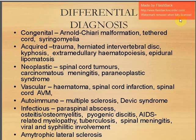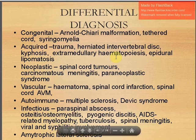For differential diagnosis, conditions to rule out include: congenital — Arnold-Chiari malformation, tethered cord, syringomyelia; acquired — trauma, herniated intervertebral disc, kyphosis, epidural lipomatosis; neoplastic — spinal cord tumors, carcinomatous meningitis, paraneoplastic syndrome; vascular — hematoma, spinal cord infarction, spinal AVM; autoimmune — multiple sclerosis, DAVIC syndrome; infectious — paraspinal abscess, osteomyelitis, pyogenic discitis, AIDS myelopathy, tuberculosis, spinal meningitis, viral encephalitic involvement; and amyotrophic lateral sclerosis.